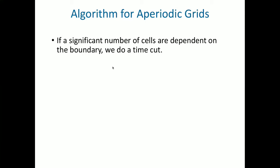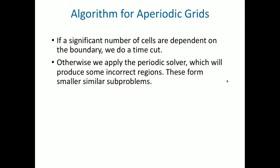So what we'll do is we'll say if a significant number of cells are dependent on the boundary, on the aperiodic part of the grid, then let's do a time cut. Let's chop the grid in half time-wise so that less cells are dependent on the boundary. And if a small enough number of cells are dependent on the boundary, that's great. We'll use our periodic solver, and the periodic solver is going to solve for all of these cells which are not dependent on the boundary.